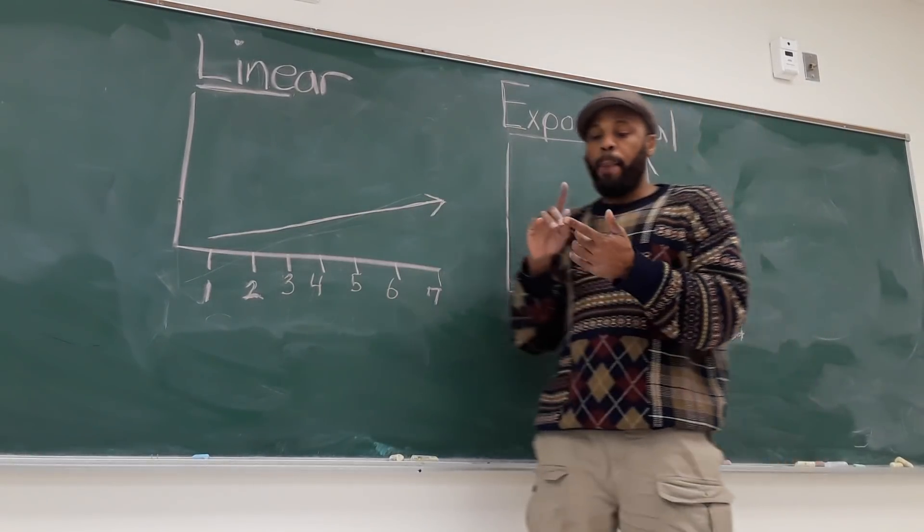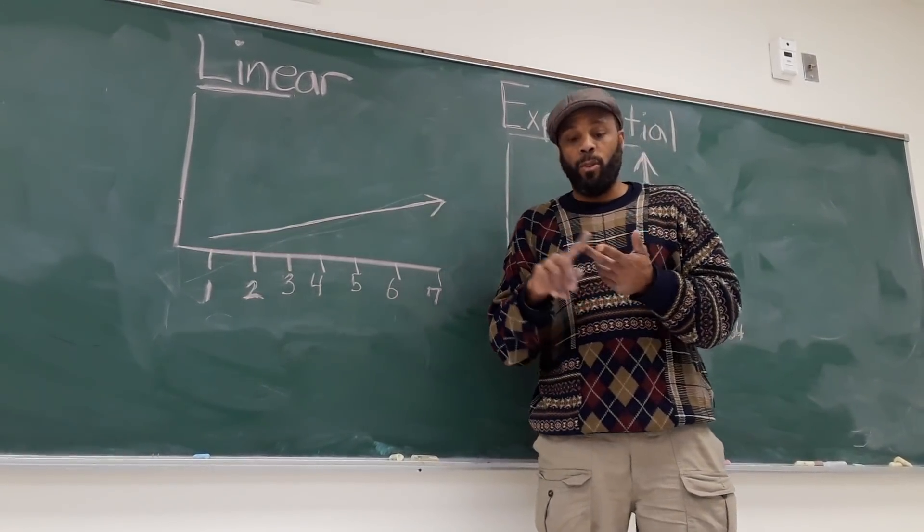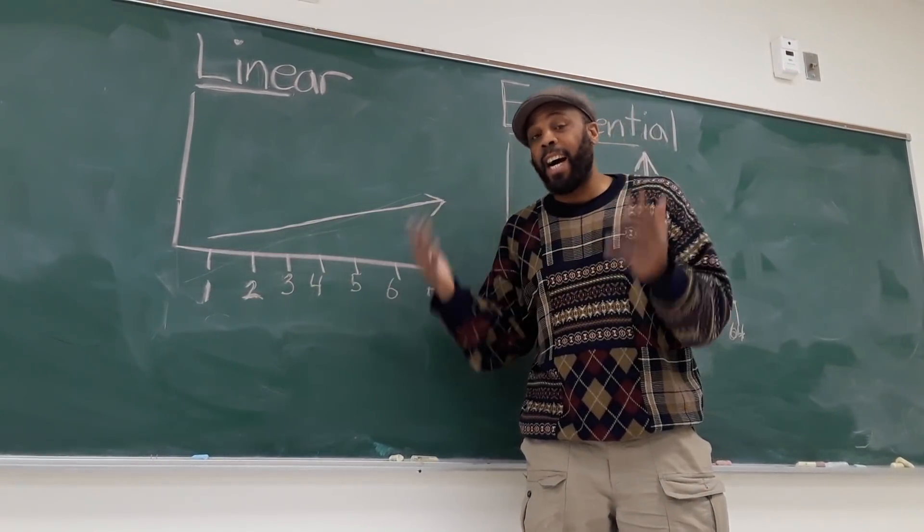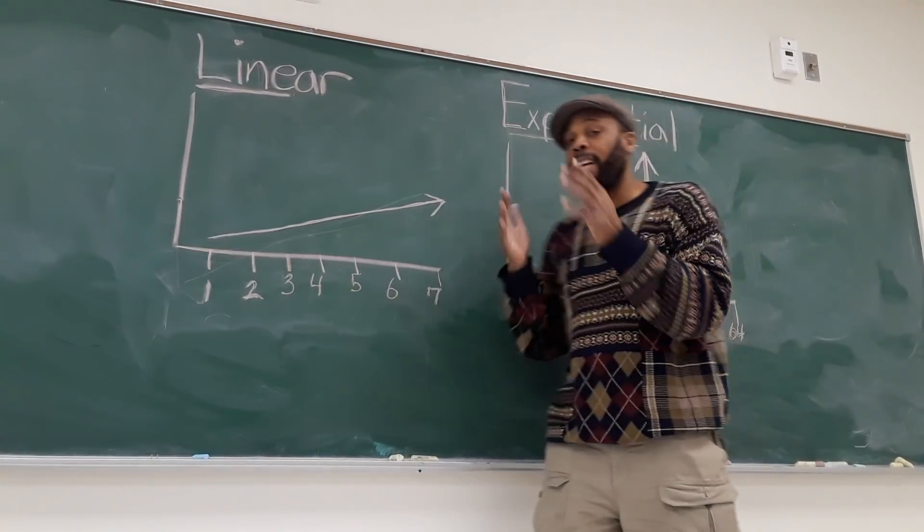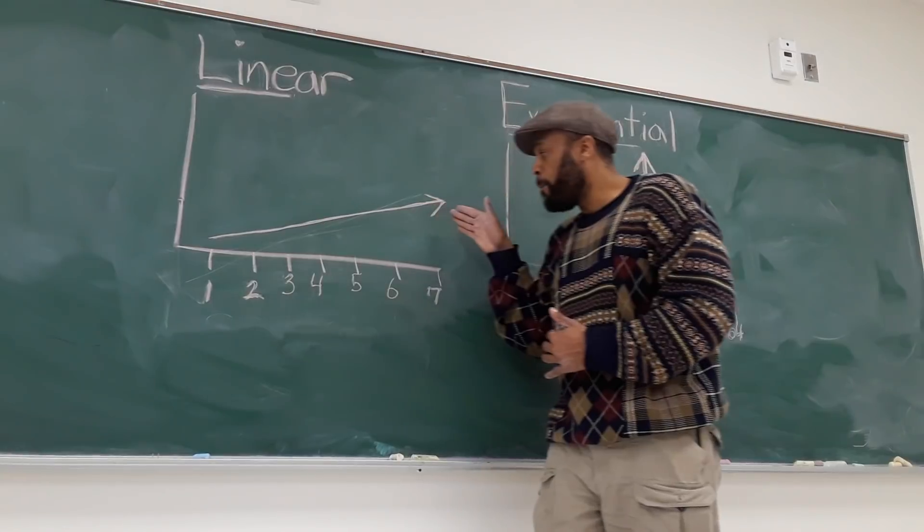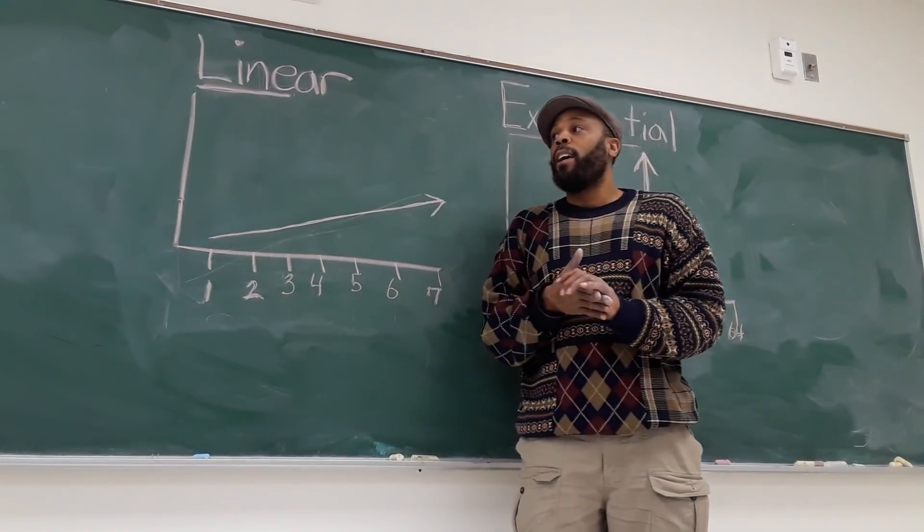There are people who operate institutions or they're in control of resources or they dominate economies who understand exponential growth models, but yet they subject the majority of the population to a linear growth model. Take, for example, a company.